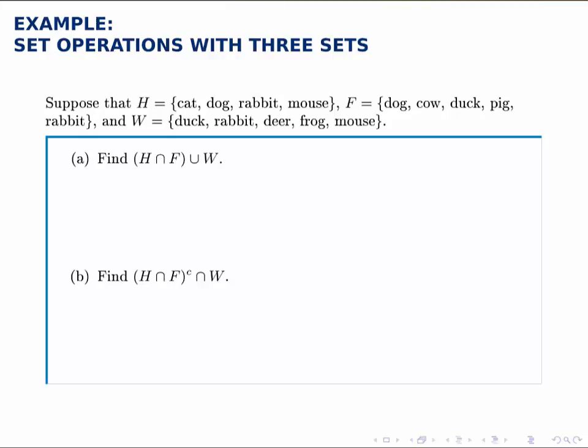Notice that we need parentheses here, as before, to indicate order of operations. So in part A, first we're going to find the intersection of H and F, and then we'll take the union of that resulting set with W.